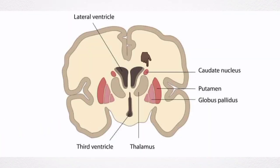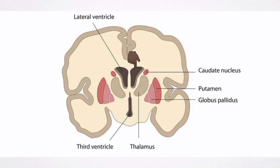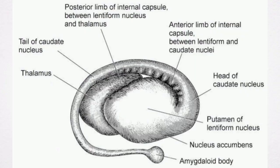The caudate nucleus is an elongated arch of grey mass lying medial to the internal capsule. Throughout its length, it is related to the lateral ventricle. The caudate nucleus has a head portion and a tail portion. The head is bulged into the lateral ventricle and situated rostral to the thalamus. The tail is long and arched, extending along the dorsolateral surface of the thalamus and ending in the amygdaloid nucleus.